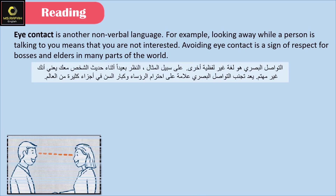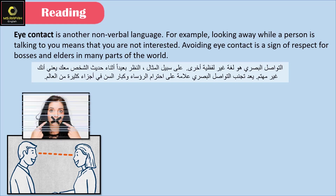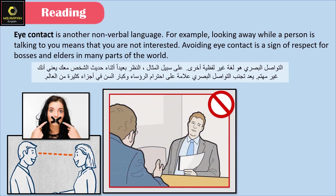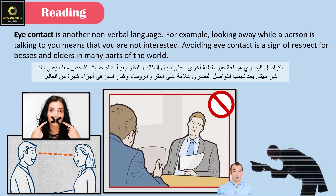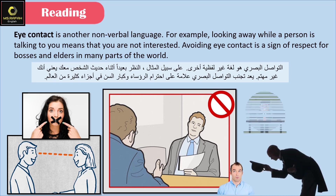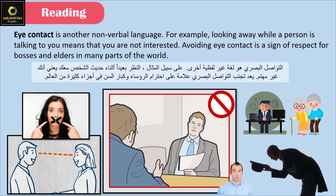Eye contact is another nonverbal language. For example, looking away while a person is talking to you means that you're not interested. Avoiding eye contact is a sign of respect for bosses and elders in many parts of the world.